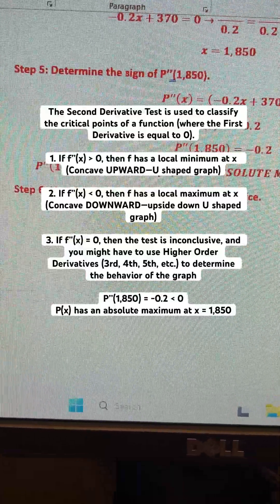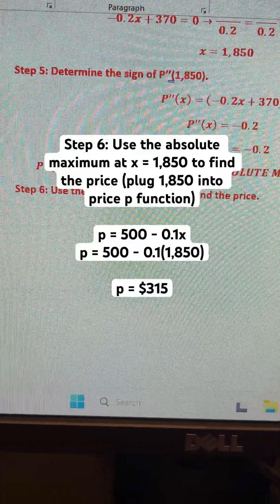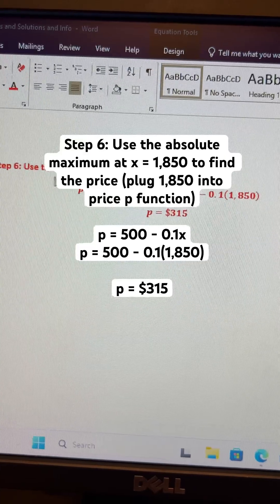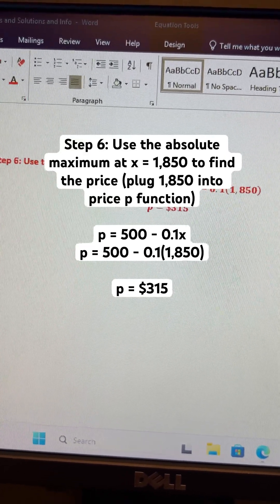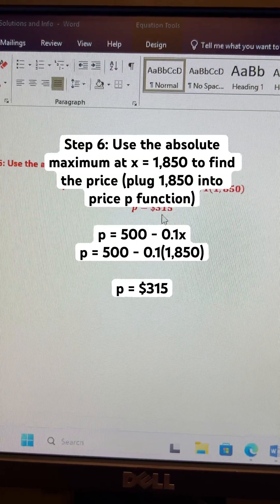And now step 6, use the absolute maximum to find the price. Alright, so plug in your absolute maximum at x equals 1850 into your price equation. You're going to get $315.